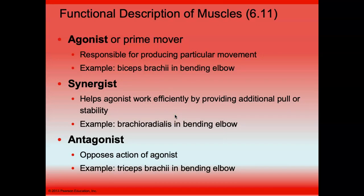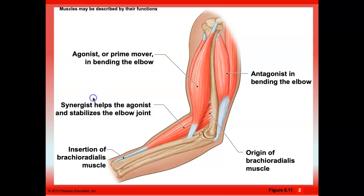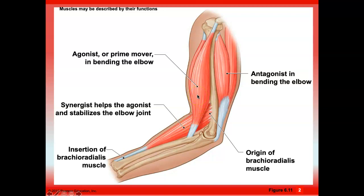In the case of the biceps brachii flexing the elbow, the biceps brachii is the agonist or prime mover. The brachioradialis is a synergist — it assists the biceps brachii by performing the same function. Muscles work in pairs: the opposite of the agonist is the antagonist. So if the agonist is the biceps brachii, the antagonist is the triceps brachii.